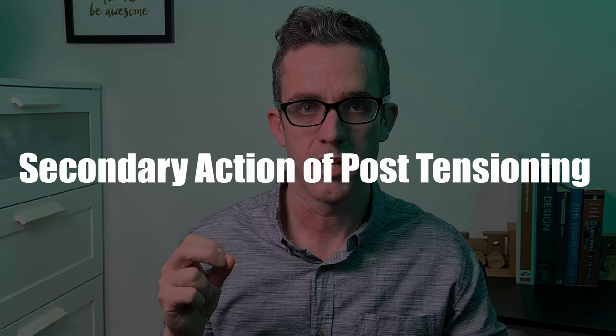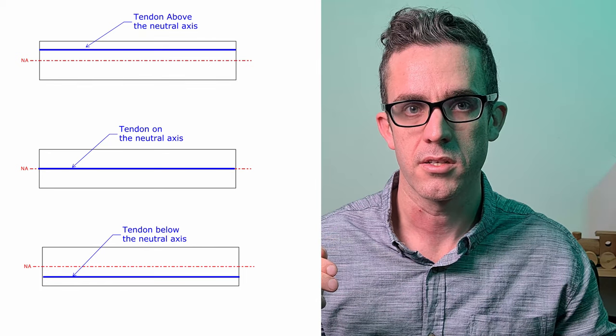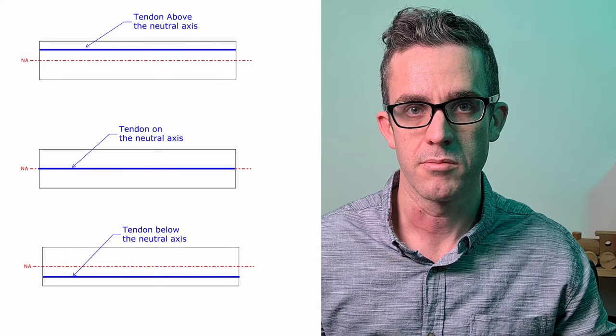So from these two actions we're able to overcome some of the issues that we have with concrete design. Understanding the secondary actions of post-tensioning is important as well. This is most easily explained by the three examples I've up on the screen. So we reflect tendon above the neutral axis, on the neutral axis and below the neutral axis. In this example we'll just assume there is no other net forces imparted than the post-tensioning themselves.